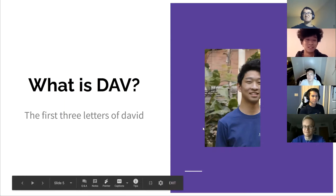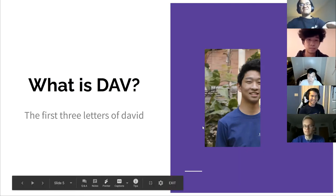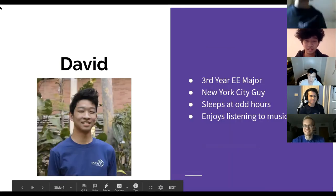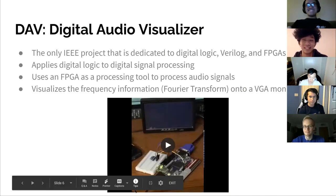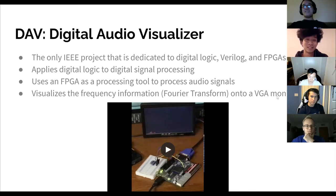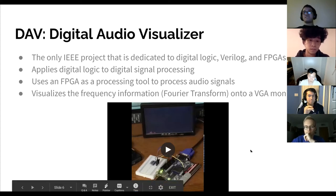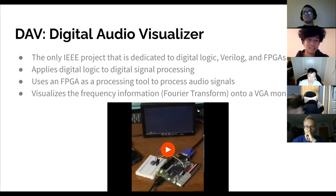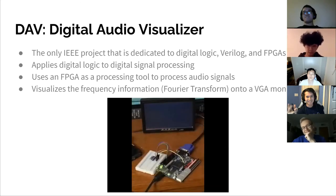So what is DAV? DAV is the first three letters of David — this project was personally named after him one night. DAV actually stands for Digital Audio Visualizer. It is the only IEEE project dedicated to digital logic, Verilog, and FPGAs. What we're going to do is apply digital signal processing to visualize Fourier transformative signals onto a VGA monitor. You should be able to look at how well DAV is working.